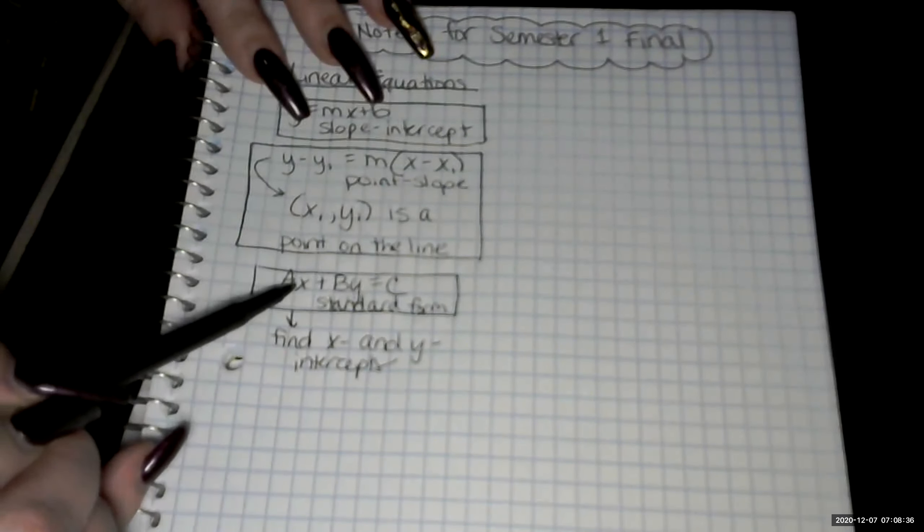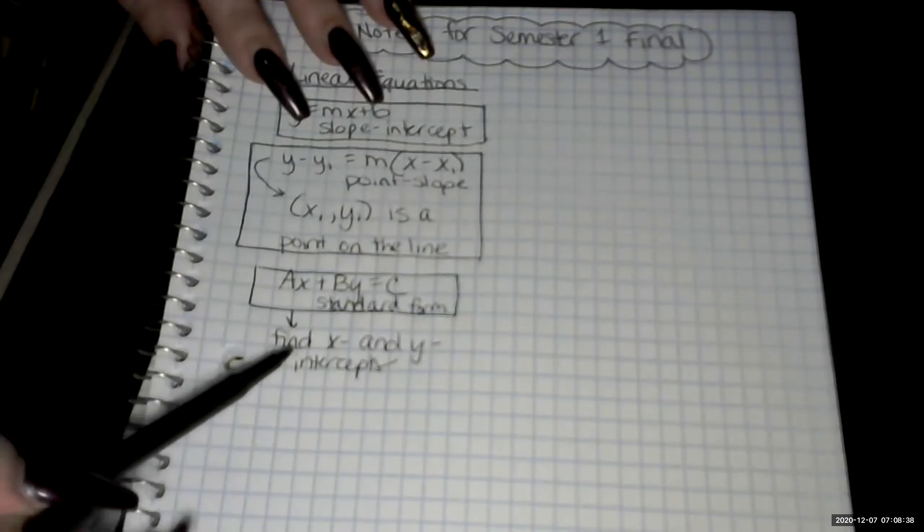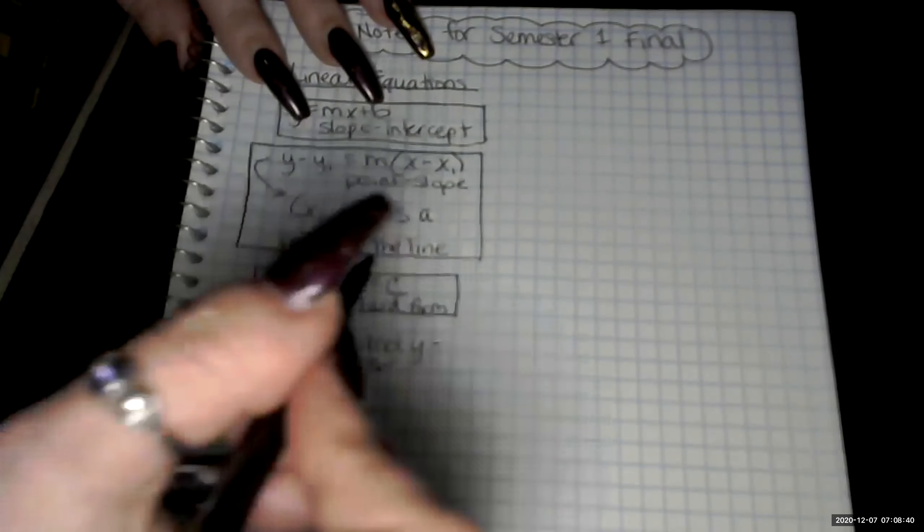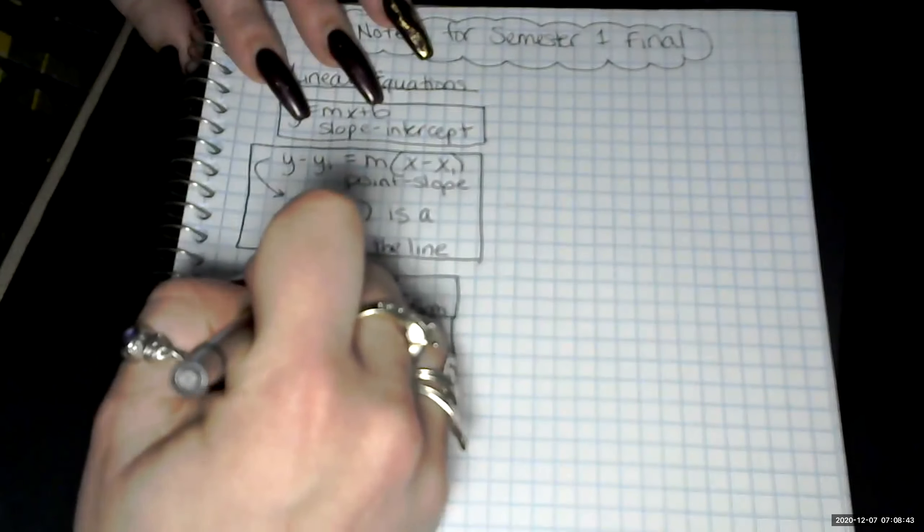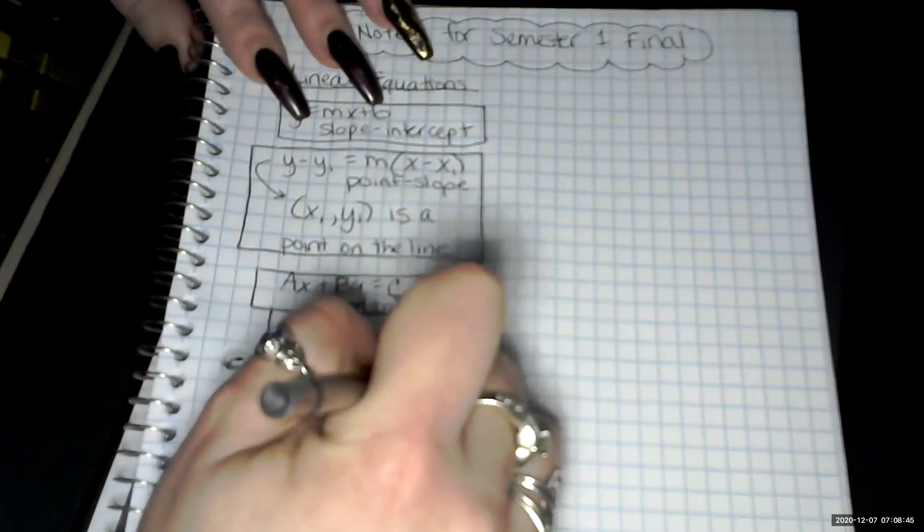Plug in a zero here, solve for x, and those are your x and y intercepts. So I'm just going to kind of extend this one out like that.